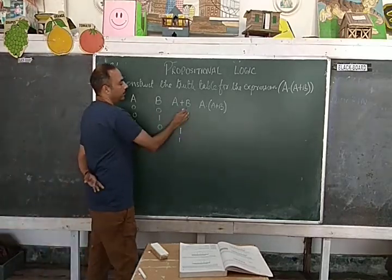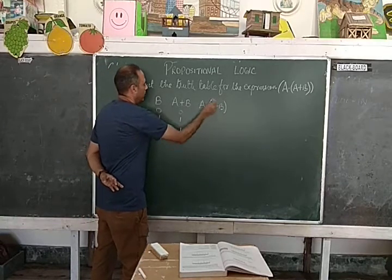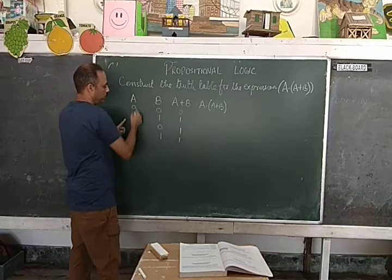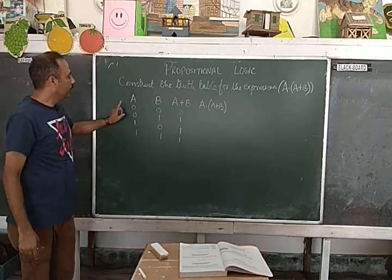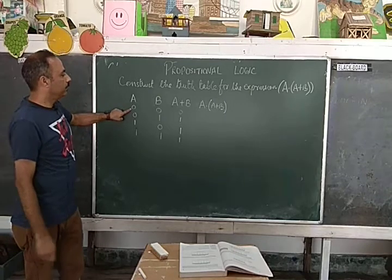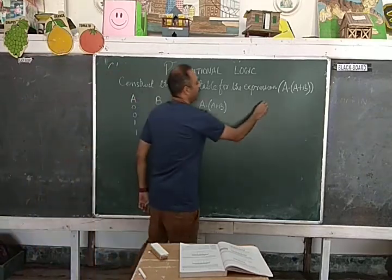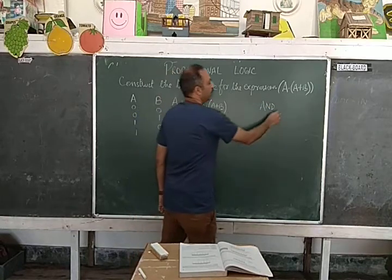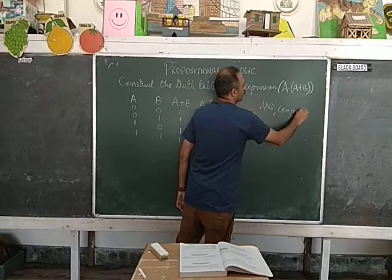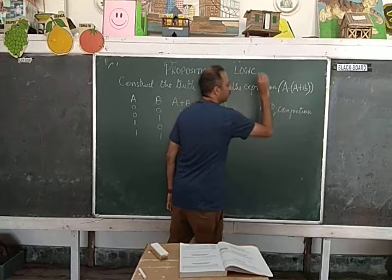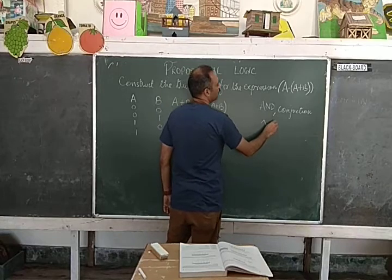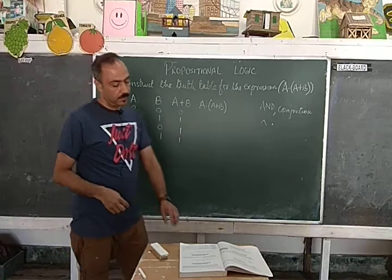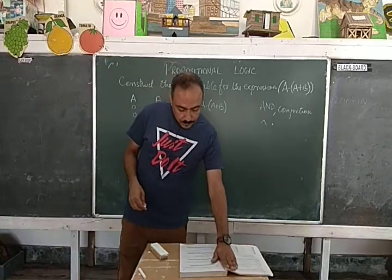Now we have to make the expression A and A plus B. This is A and this is A plus B. Now we need to compare these statements. Here we are using the AND connective. The AND connective is also called conjunction. The symbol may be like a dot, or it may be represented by the AND connective.